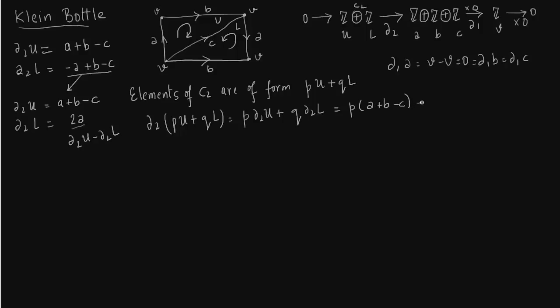So now we just plug this into this equation. And what we get is now is (P plus Q) times 2A and then P times (B minus C).